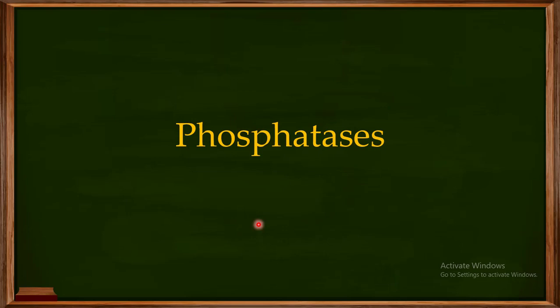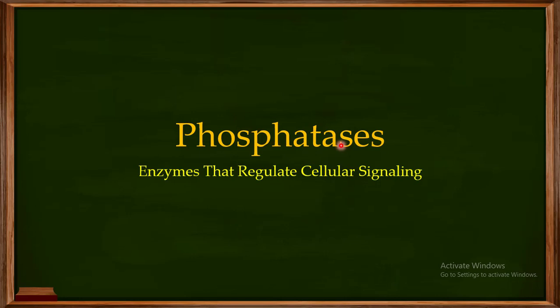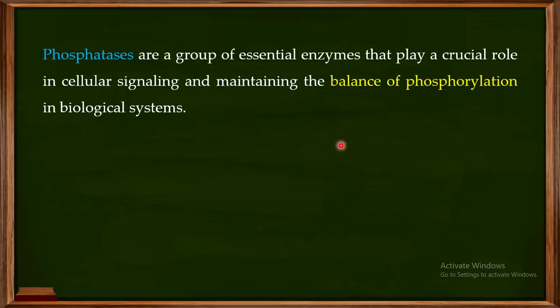Welcome back to this next video. In this particular video, I am going to talk about a specialized class of enzymes known as the phosphatases. These phosphatases are very important for the regulation of cellular signaling in living organisms. They are an essential group of enzymes that play a crucial role in cellular signaling and maintaining the balance of phosphorylation in biological systems.